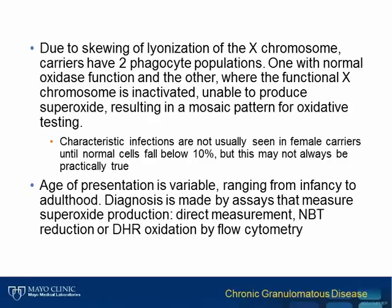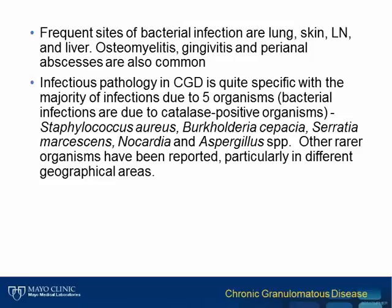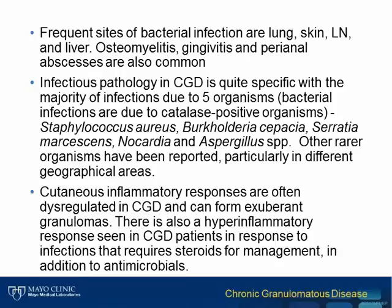The primary assays used for diagnosis of CGD measure oxidative burst, which will be described later. The infectious phenotype in CGD is typically associated with five organisms: Staphylococcus, Serratia, Burkholderia, Nocardia, and Aspergillus. Candida infections can occasionally be seen, though they are not systemic. Other rare bacterial infections with Chromobacterium and other species have also been reported. Granulomas in skin and other organs are frequent, and there is often a hyperinflammatory response associated with infection in CGD that does not respond to antimicrobials but requires steroids.